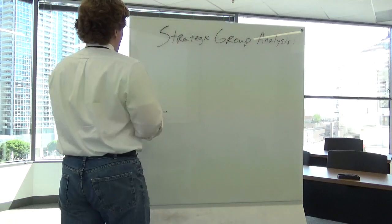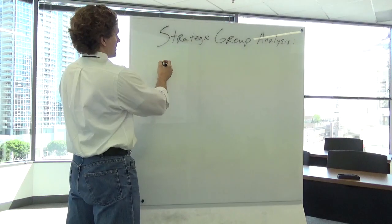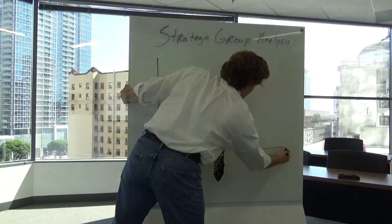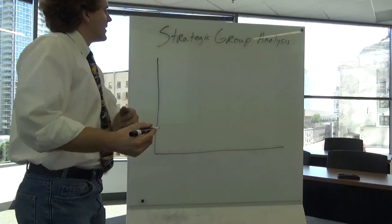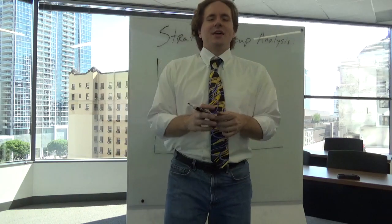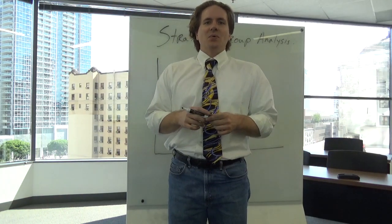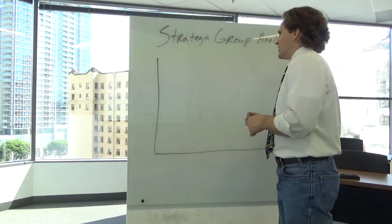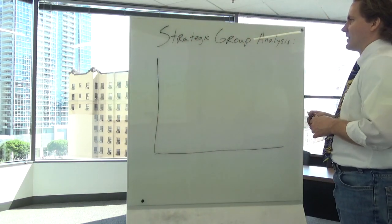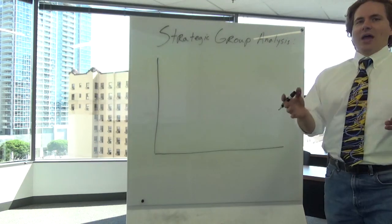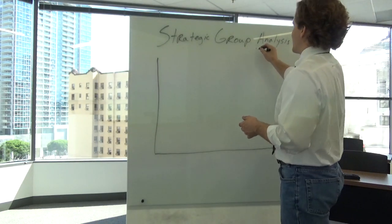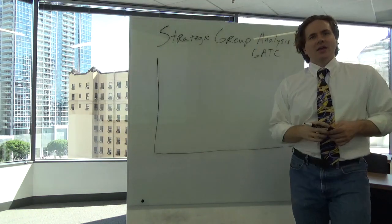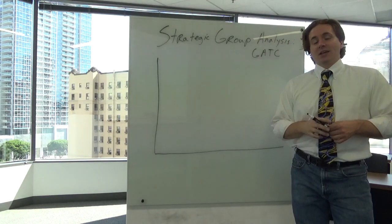So first thing you want to do when you look at strategic group maps is draw the axes. Now you can put a variety of things on your axes and having different axes will give you very, very different strategic group maps. So again you don't have to do it but I really like GATSY as a way to figure out what axes I like. So those of you that did not see my segmentation videos,